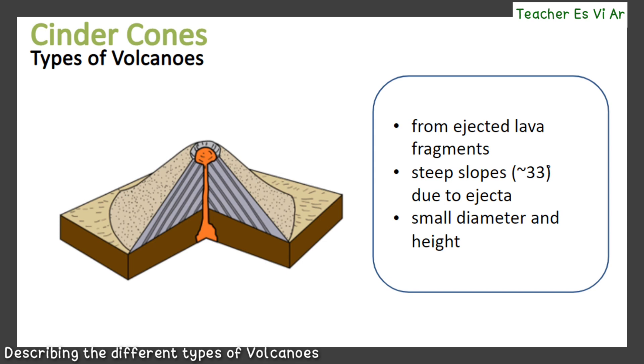The second type of volcano is the cinder cone. Cinder cones are volcanoes formed from loose rock fragments ejected from a central vent. The ejecta, or ejected particles, land near the vent, forming a cone with a slope of approximately 33 degrees.